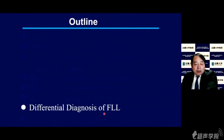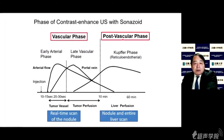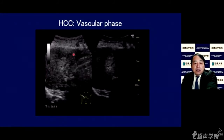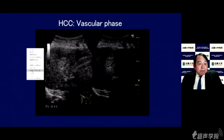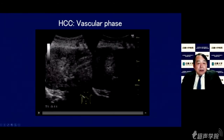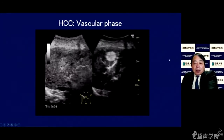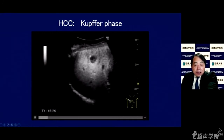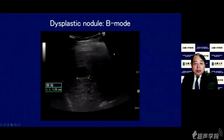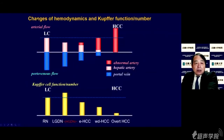I'd like to move on to differential diagnosis of focal liver lesions. Because there are two phases — vascular phase and post-vascular or Kupffer phase — we can differentiate tiny liver lesions. For HCC: in the vascular phase you see typical arterial enhancement, and in the Kupffer phase you see a clear defect. This is the typical pattern of HCC.